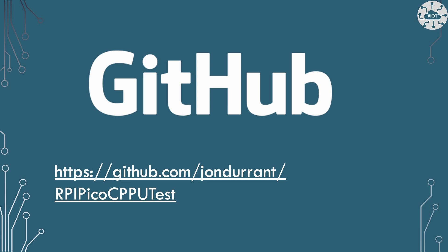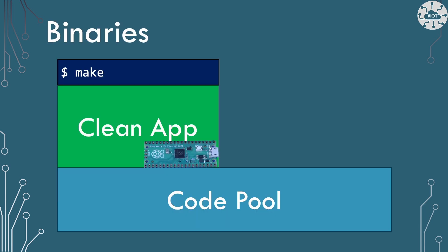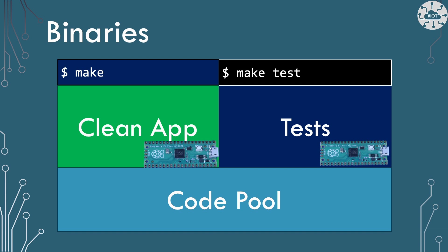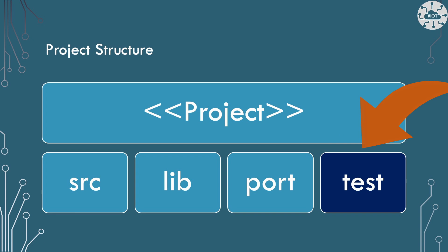I'll share all the code on GitHub for this project and put the link in the description. The repo contains both the bare metal version we looked at last time and the new FreeRTOS version I'm going to talk about in this video. We want a mechanism where I can build the clean application by just typing make, or ninja if you're on Windows, and build a test binary with all of the unit tests by issuing the command make test. Both are going from the same code base. Our project structure is going to look as normal with the source, library, and port code for those libraries, and then we've got the test folder, which will contain the unit tests, the initiation script, and my new platform that's going to work for the FreeRTOS platform.